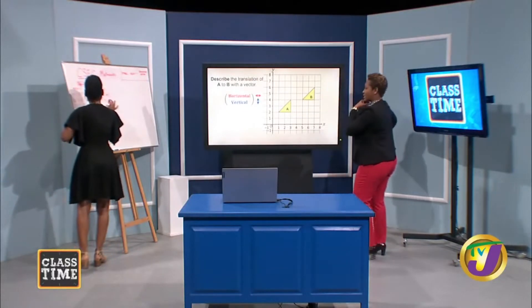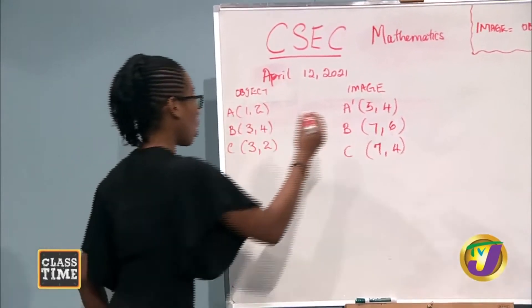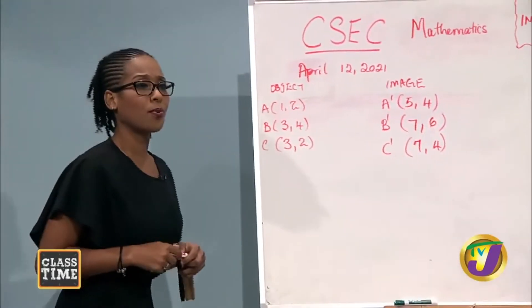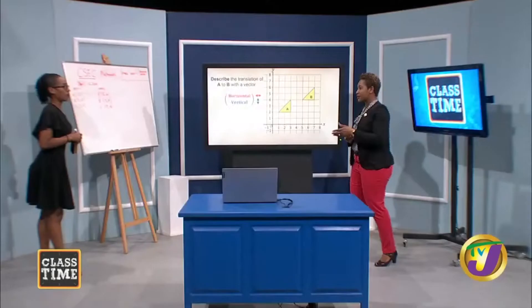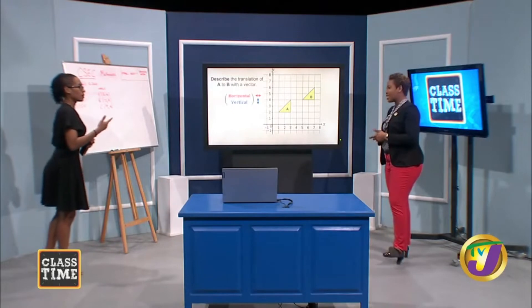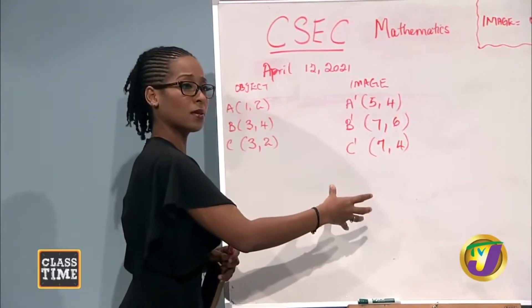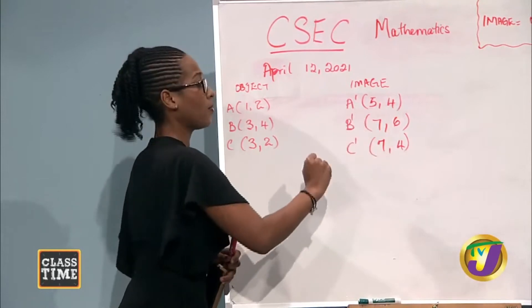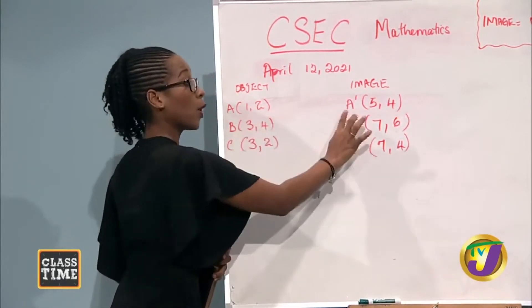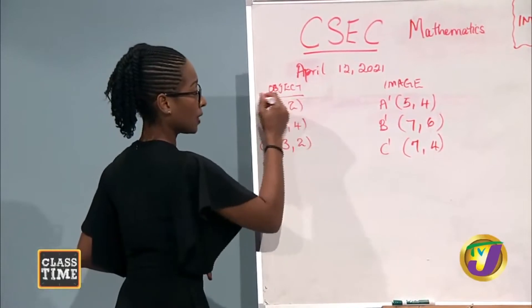Why are we calling it prime? Because it is not the original — it is an image that came from the original, after some transformation has taken place. So we can't call it the object again. It is now the image. Once we see a prime, it means that some transformation has taken place. So let's take two points: point A from our object and A prime from our image.